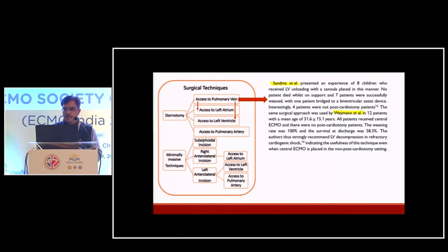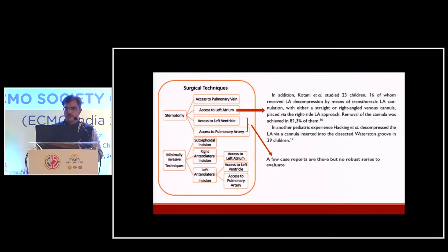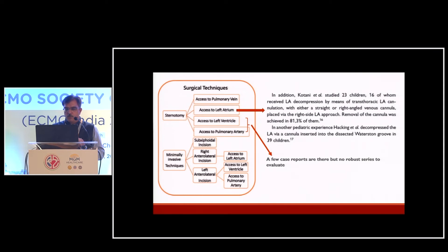These authors studied pediatric patients and confirmed unloading is beneficial. Kotani et al. studied 23 children, 16 of whom received LA decompression via transthoracic LA cannulation with straight or right-angled cannulas through a right-sided LA approach — decannulation was achieved in 81% of patients. Hacking et al. decompressed the LA via a cannula inserted into the dissected Waterstone groove in 39 children with benefit. A few case reports exist of directly placing vents in the LV and PA.